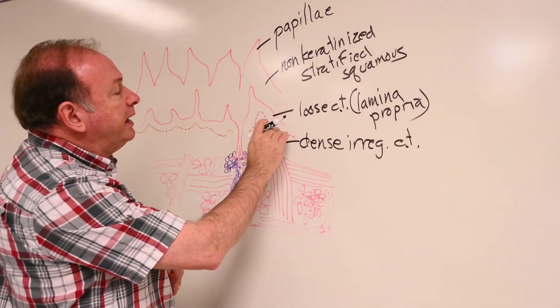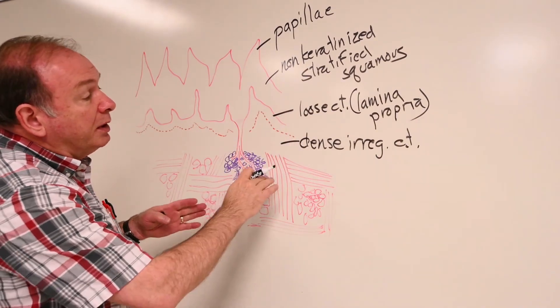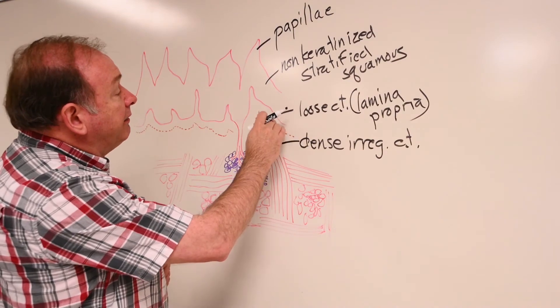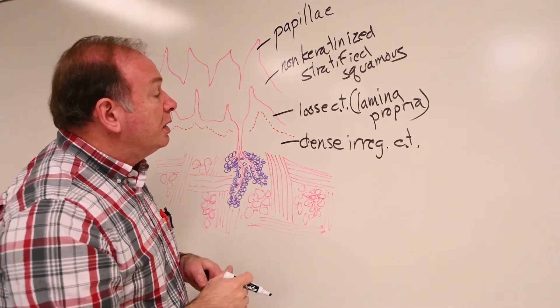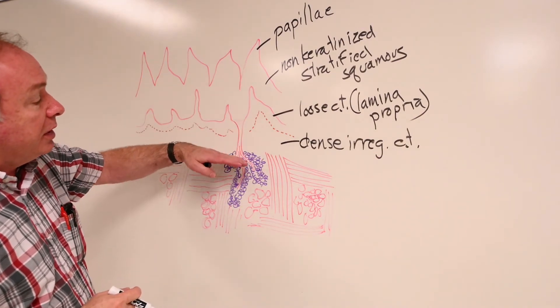Now, in some specimens, this will be very thin, and there will hardly be any dense, irregular connective tissue in there. In some cases, there will be a very, very thin, loose connective tissue layer above your dense connective tissue. But beyond that, as you go through into the tongue, into the body of the tongue...